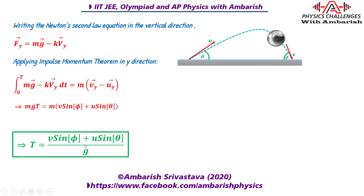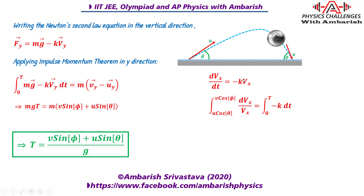That was one part of the question. Now let's find the drag coefficient. Since the drag force is proportional to and opposite the velocity vector, in the x direction the component of drag force is minus k·vx. So dvx/dt = minus k·vx. This is a simple differential equation — separating variables and integrating, with the initial x-velocity u·cos(theta) and final x-velocity v·cos(phi), the right-hand side simplifies to minus k·T. Solving for k gives all the terms on one side.